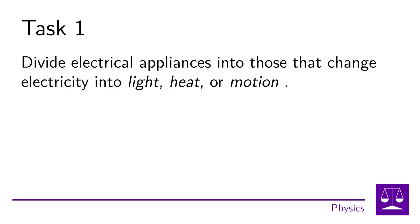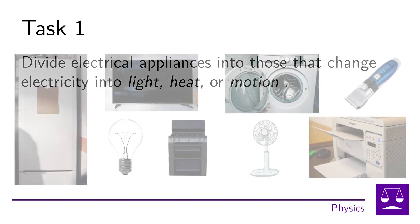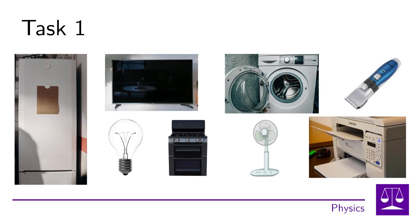In the first task, we have to classify electrical appliances into those that convert electricity into light, heat, or motion — that is, divide them into light, heat, and motion appliances. In the picture we have eight electrical appliances used in the home. We could divide these appliances, for example, as follows.